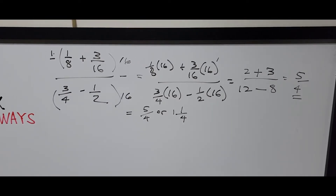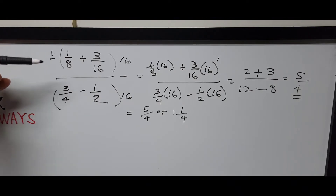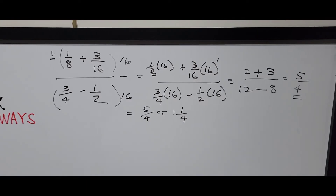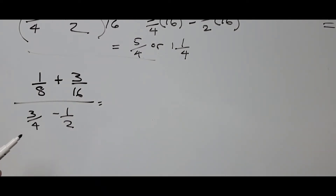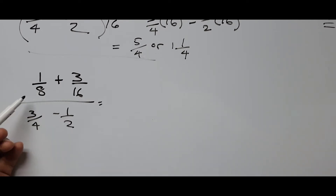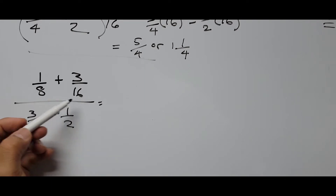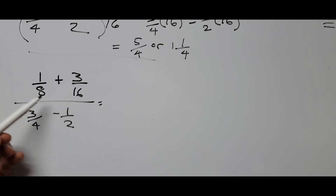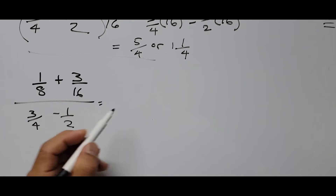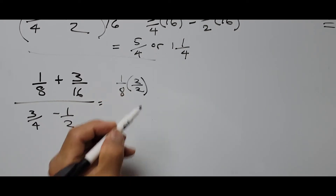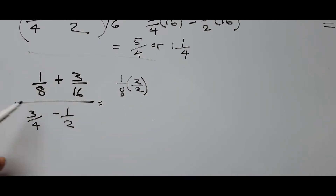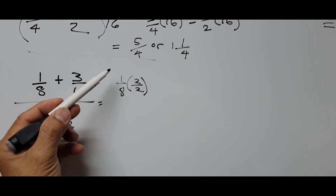The second way is to find common denominators independently for the numerator and the denominator. We rewrite the problem. For the numerator: 1/8 and 3/16 — to make denominators the same, multiply 1/8 by 2/2 to get 2/16. So the numerator becomes 2/16 plus 3/16. For the denominator: 3/4 and 1/2 — multiply 1/2 by 2/2 to get 2/4. So the denominator becomes 3/4 minus 2/4. This special factor of 2/2 equals 1 so it doesn't affect the fraction.